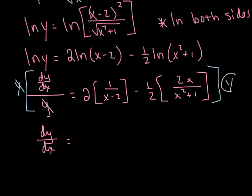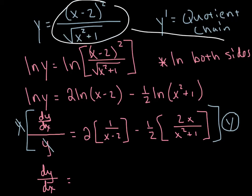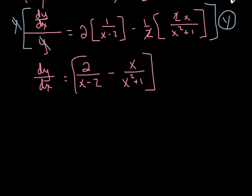Over on the right side, I don't want to leave it in terms of both x and y, so I'm going to substitute — at the beginning of the problem we said y equals that ugly quantity. I'm going to substitute that back in. So I've got 2 over (x minus 2) minus x over (x squared plus 1), and we wrap it up by multiplying by the y we started with: (x minus 2) squared all over the radical of (x squared plus 1). And that, ladies and gentlemen, is my final answer.